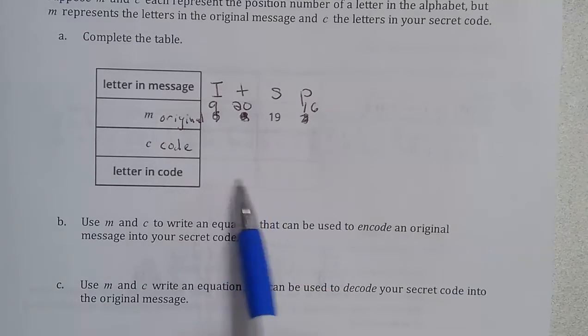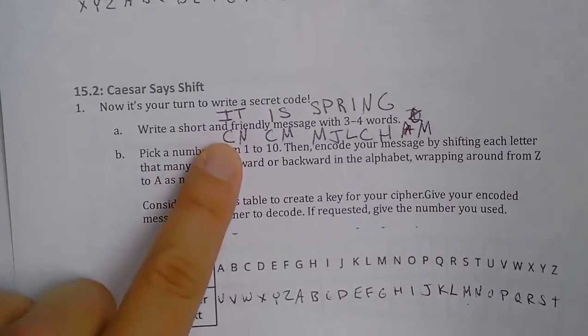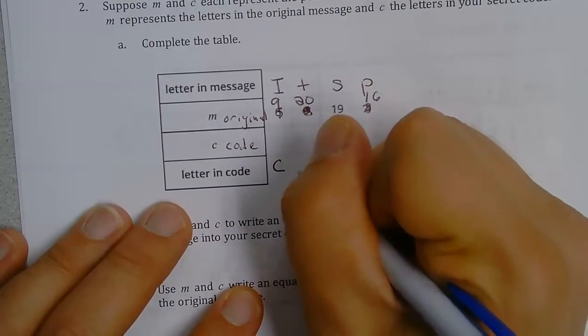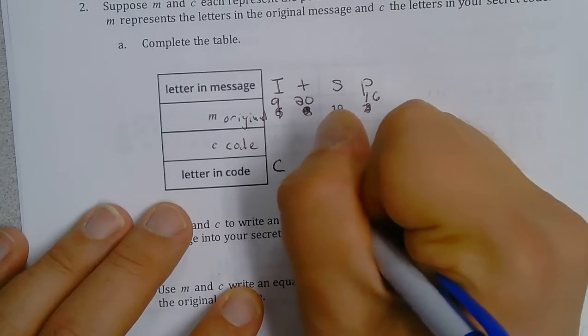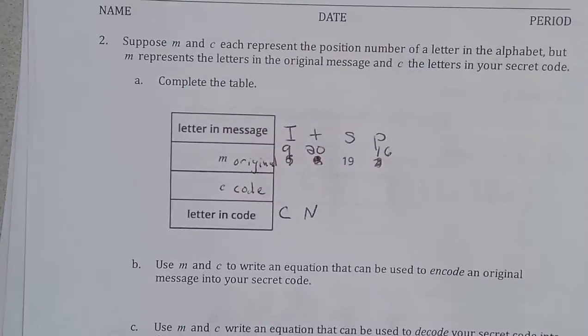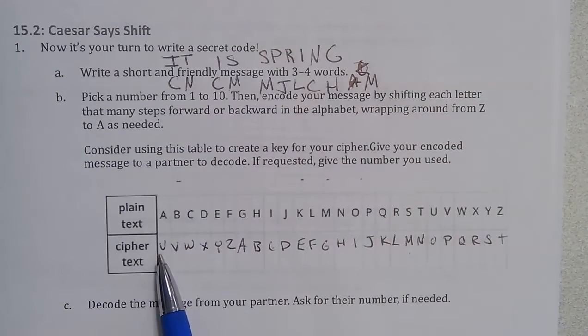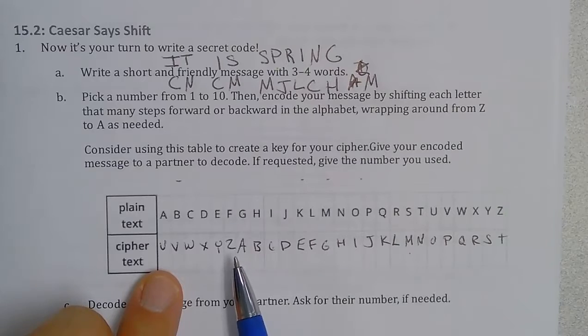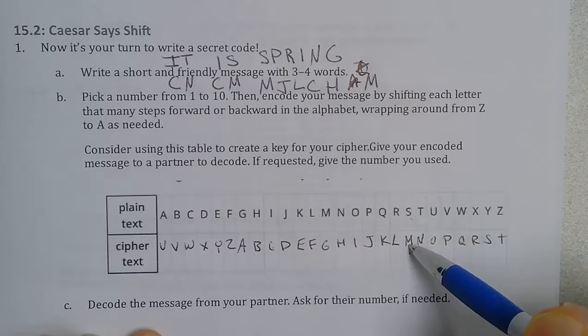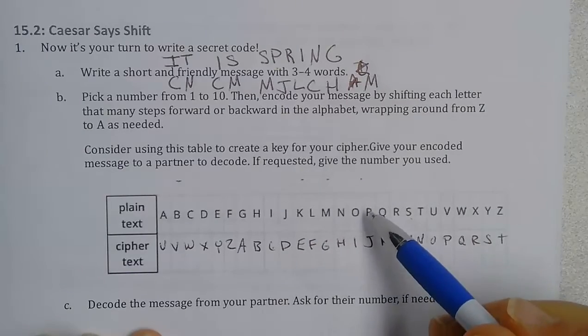Now I'm going to go back and look at what letters in the code those corresponded to. So it was CNN — the I was coded as C and N. And then we have to look up S and also P. S gave us M, and P gave us J.